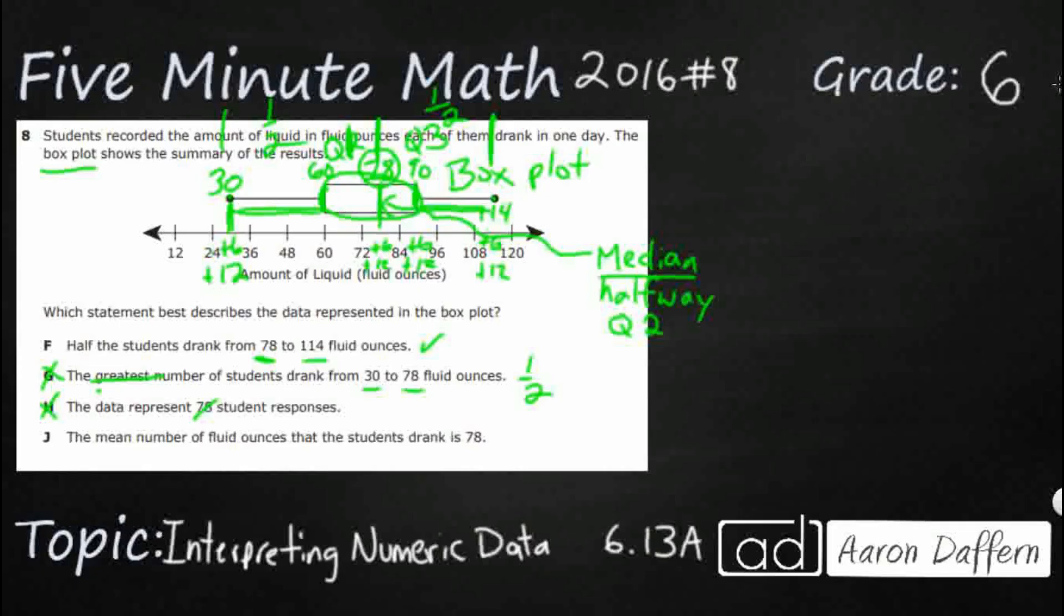And then finally, J, the mean number of fluid ounces that the students drank is 78. This is so tricky because the mean is the average. You take all of your numbers, divide them by how many responses you have, you get your mean. And this is the median, not the mean. They're close, but not identical. Answer is F.